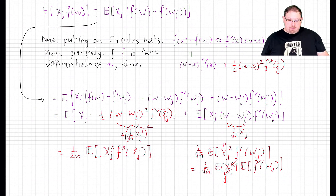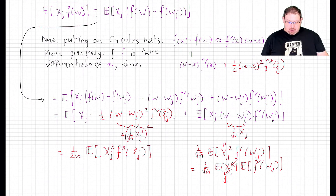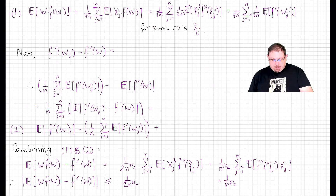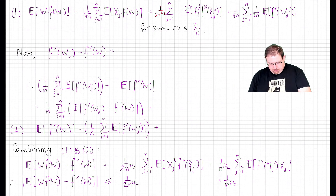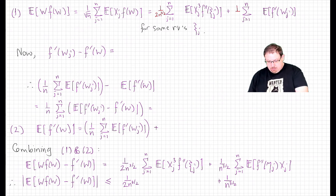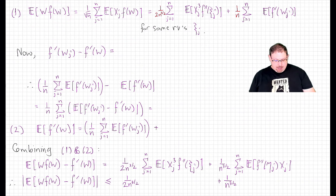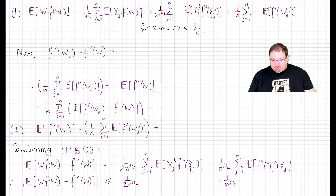So altogether, summing over j with the overall 1/√n factor, the first Stein term E[wf(w)] becomes 1/(2n^{3/2}) times a sum involving x_j³ f'' terms, plus 1/n times the sum of E[f'(w_j)]. Now the Stein term we need is the difference between E[f'(w)] and E[wf(w)]. We already have E[f'(w_j)] appearing here, so we need to compare that to E[f'(w)].